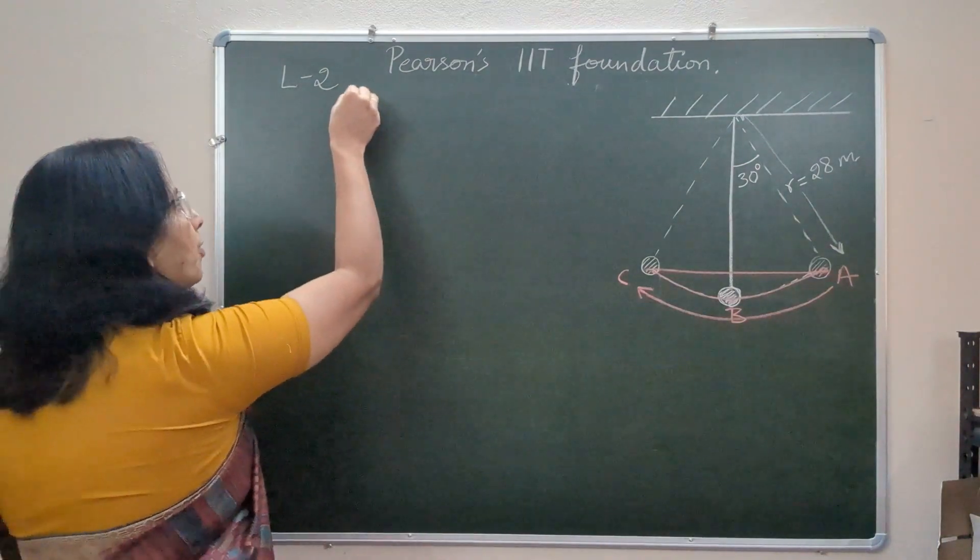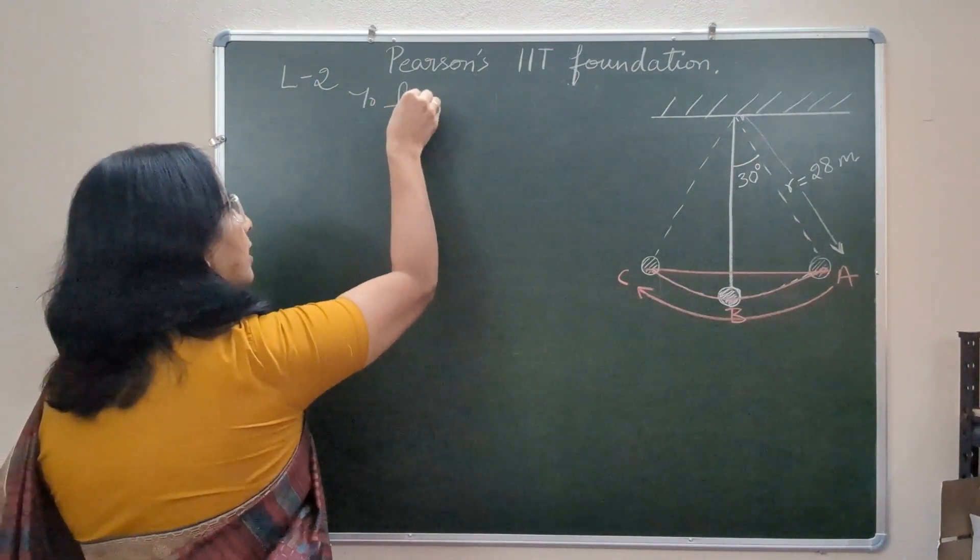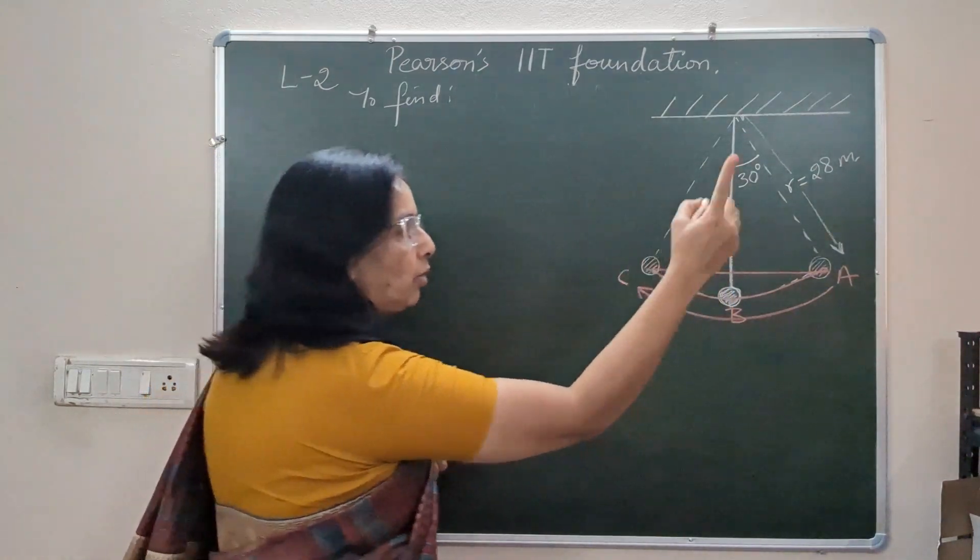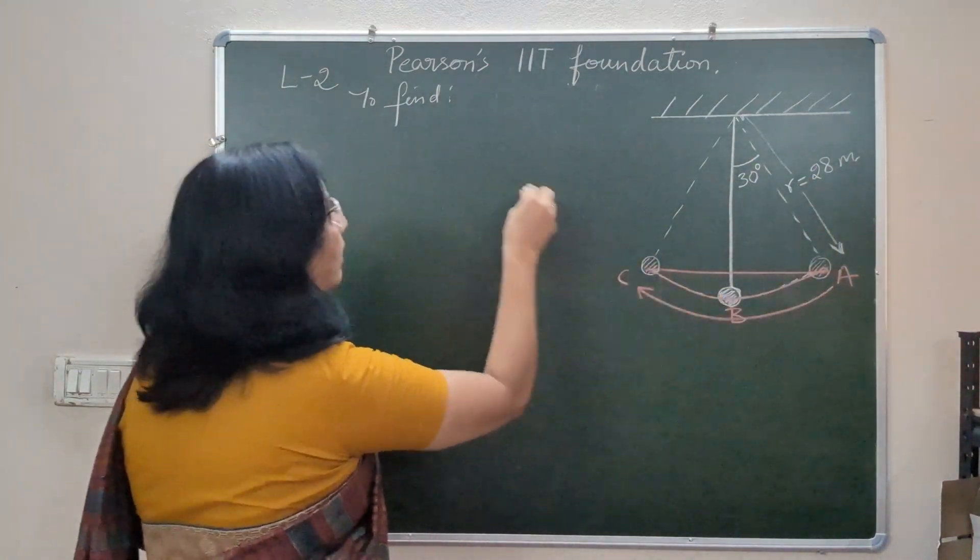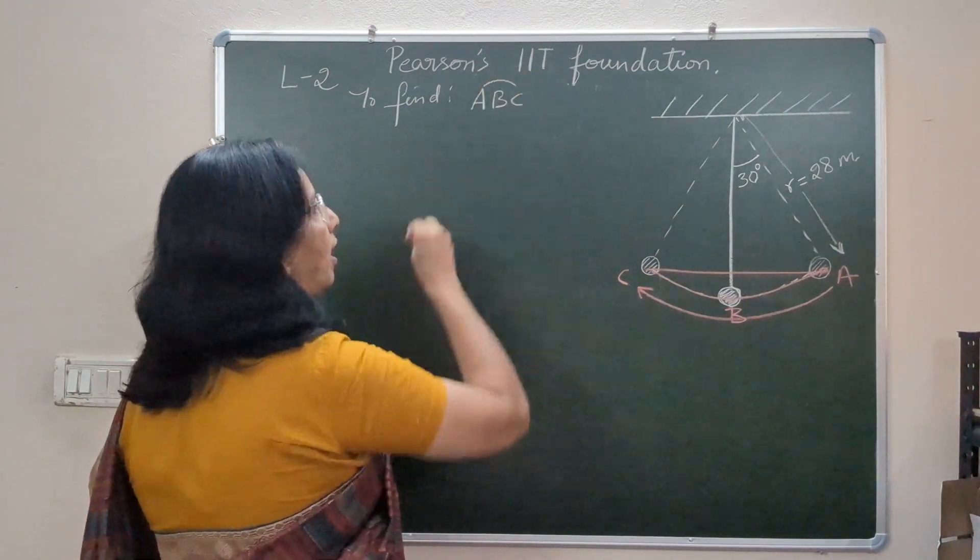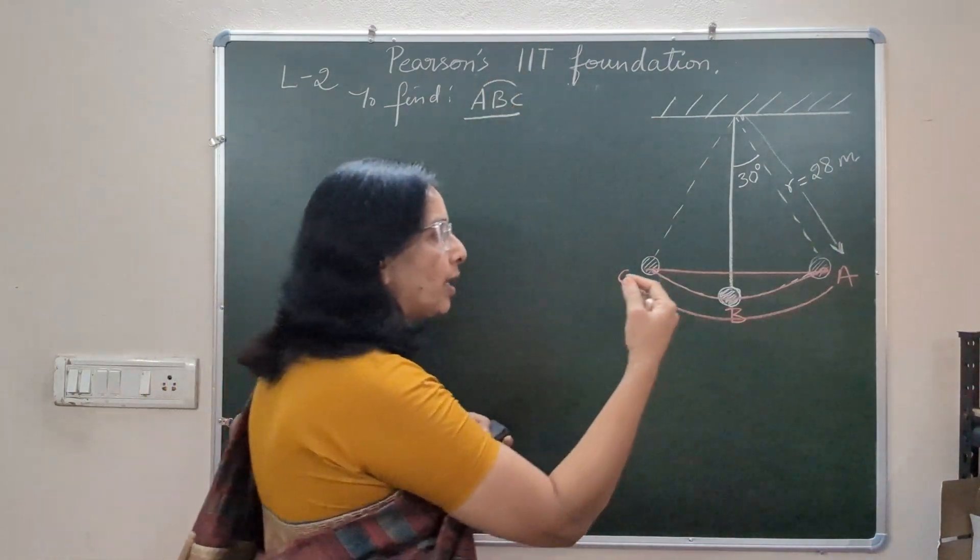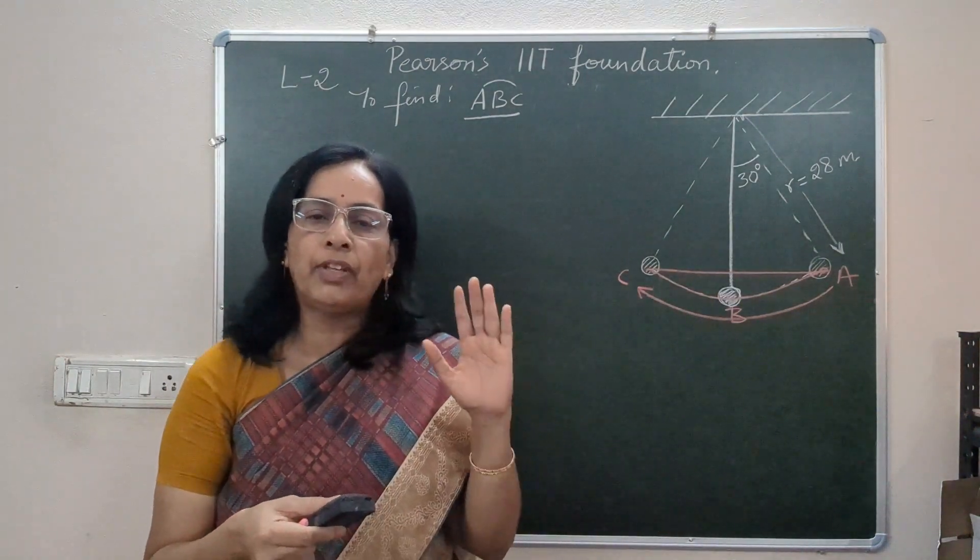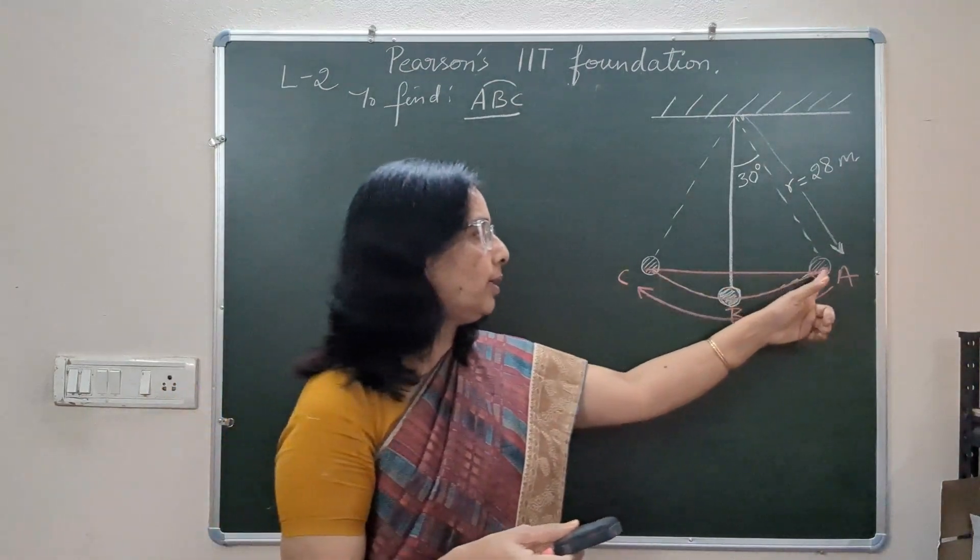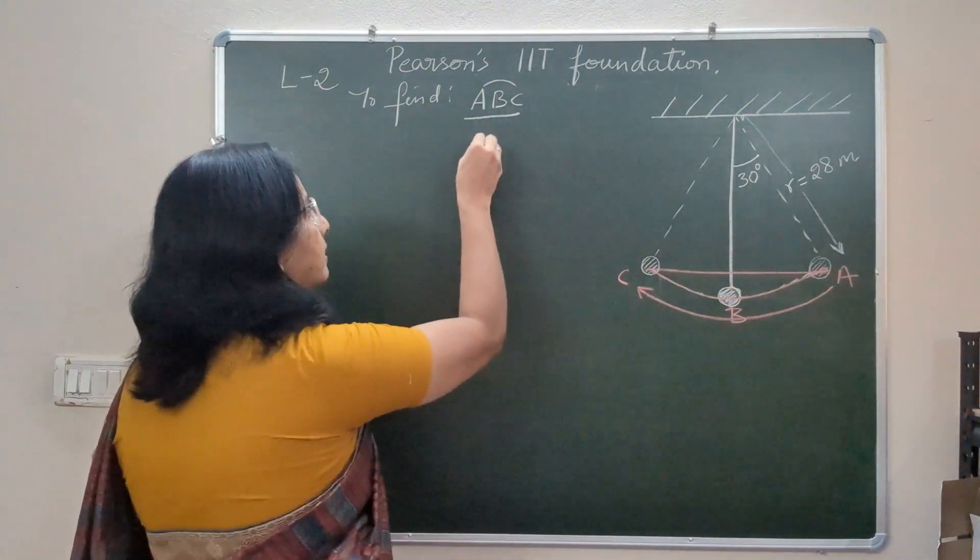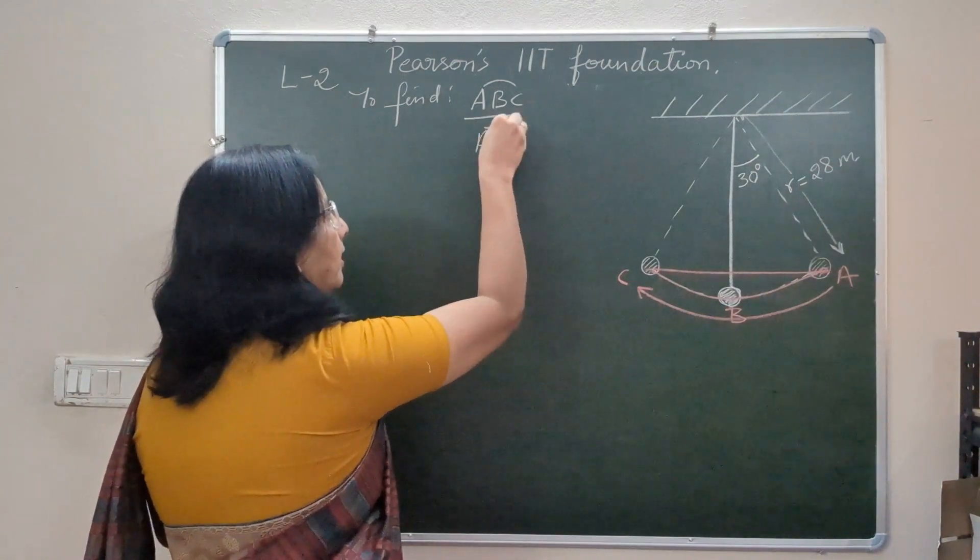We are supposed to find the ratio of ABC, the distance traveled by the pendulum from one extreme position to another, which is the length of arc, divided by displacement. Displacement is always the shortest distance between initial point to final point. So displacement is A to C straight line, the AC line segment.